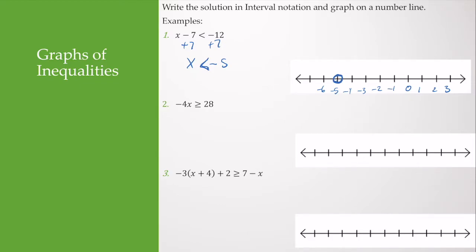Negative 5 is not included, so I represent it with an open dot. Let's pick a test point — is negative 4 less than negative 5? No, but negative 6 is. So I shade to the left. Reading the graph left to right, we have negative infinity over here. In interval notation, that's from negative infinity to negative 5, and because negative 5 is not included, it gets a parenthesis.